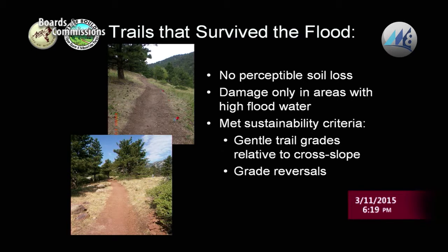Applying trail sustainability and looking at how our trails fared after the 2013 flood: those meeting our sustainability criteria had no or little perceptible soil loss or erosion from the trail surface. The major damage on those trails was at drainage crossings, areas near high flood water, or landslide sites — where trail design can't do much. They met sustainability criteria in regard to gentle to moderate trail profile grades relative to the cross slope and grade reversals — terms I'll explain shortly.